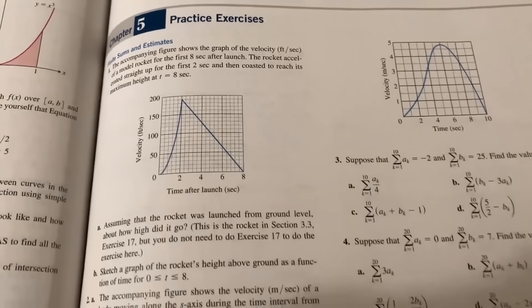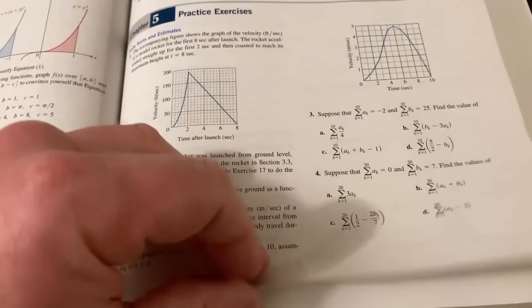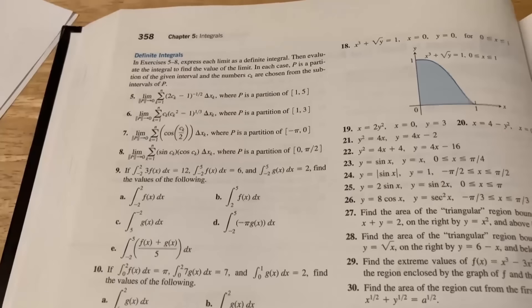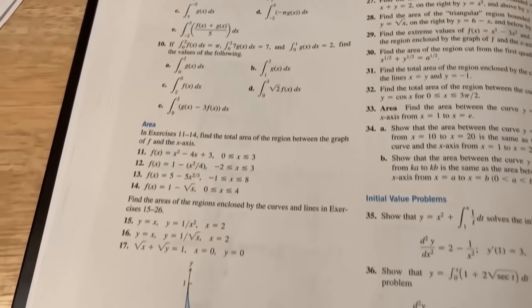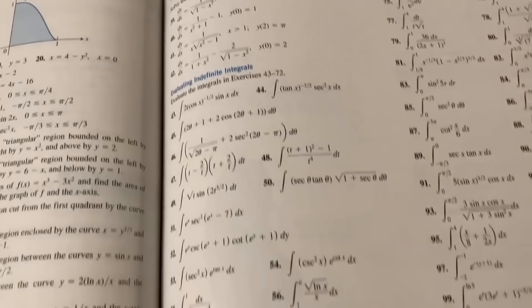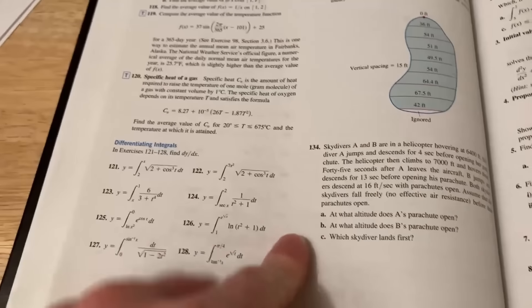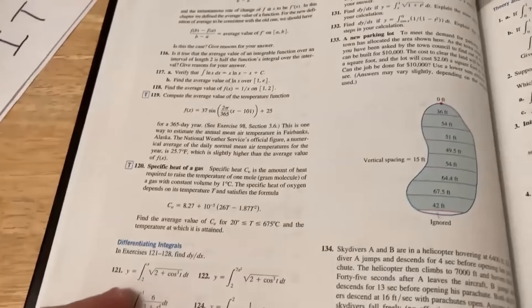These are the chapter five practice exercises. Look at this. This is completely insane. Look how many problems there are. Just tons, tons of problems. I mean, how many do we even have here? One hundred and fourteen. One hundred and thirty-four problems. That's in addition to the individual section problems.